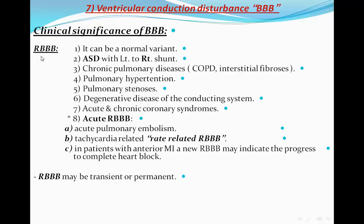Clinical significance of bundle branch block. Right bundle branch block can be a normal variant. It may be associated with left-to-right shunts, chronic pulmonary diseases such as COPD or interstitial fibrosis, pulmonary hypertension, pulmonary stenosis, or degenerative disease of the conducting system. Acute and chronic coronary syndromes can also cause right bundle branch block, as can acute pulmonary embolism. Tachycardia-related or rate-related bundle branch block may also occur. In patients with anterior wall MI, developing a right bundle branch block may indicate risk of complete heart block — a bad prognosis. Right bundle branch block may be transient or permanent.